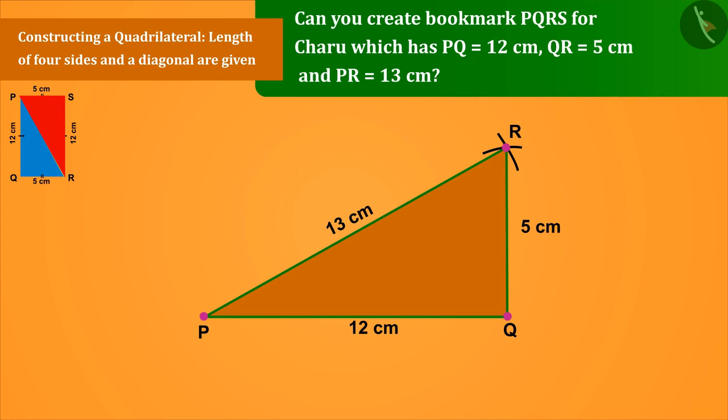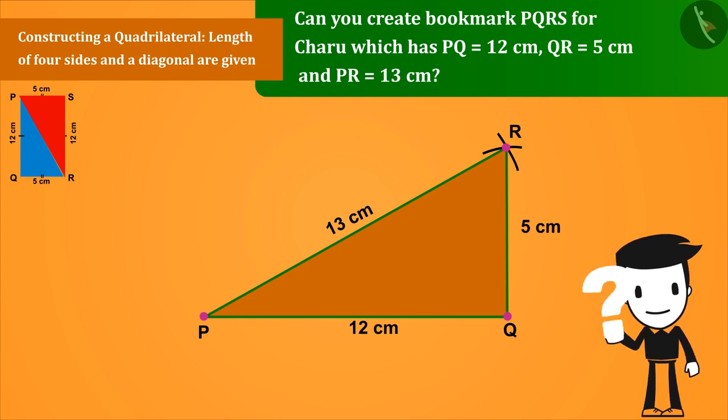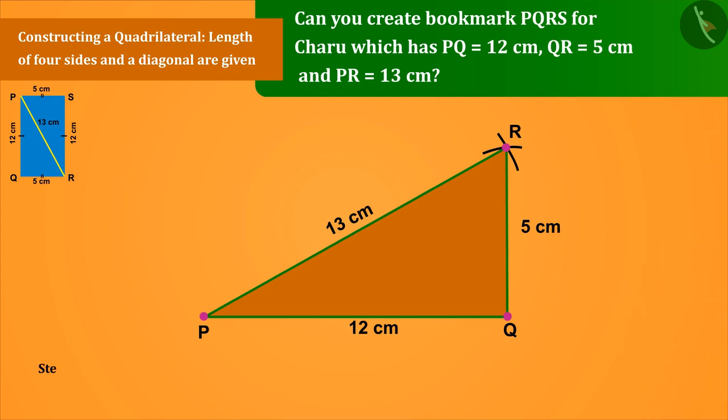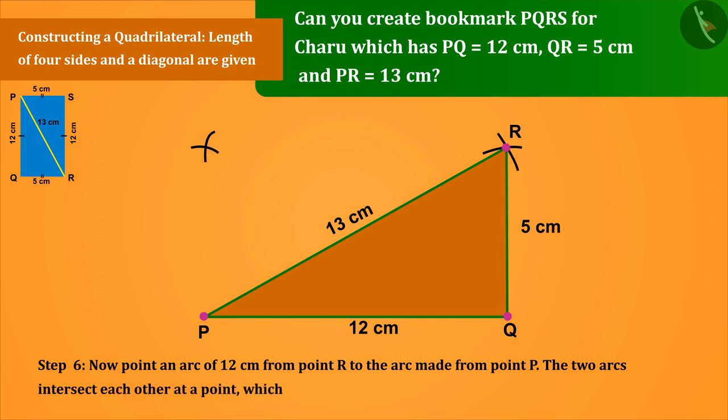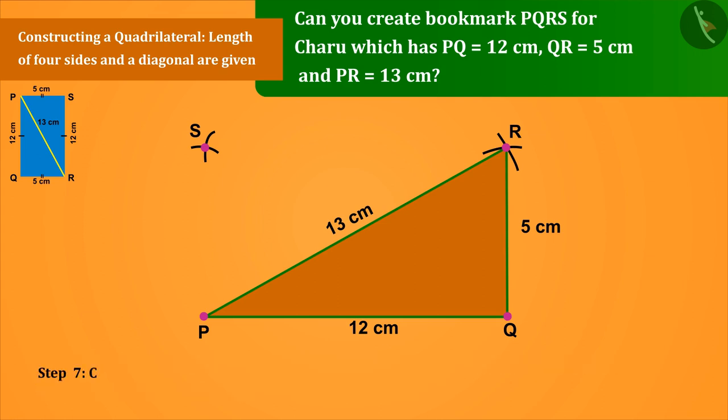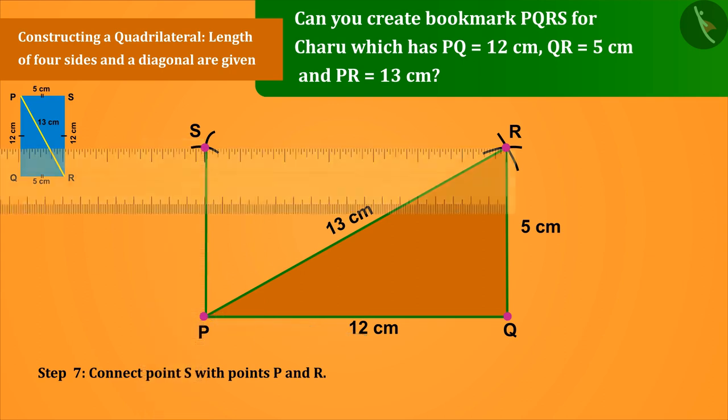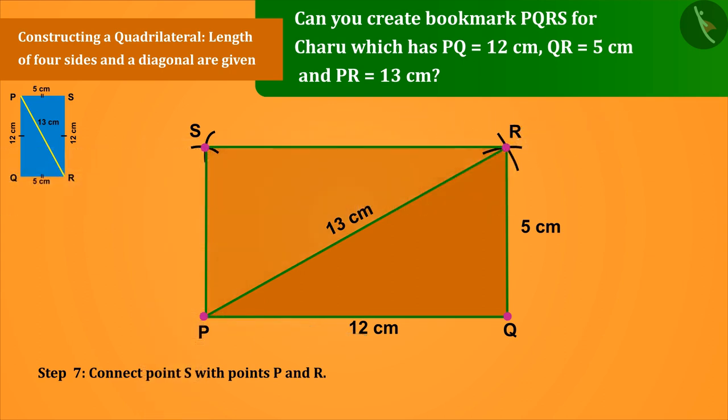Now can you think how to make a triangle PSR? The two arcs intersect each other at a point which we nominate with S. Now we connect the point S with the points P and R, from which we get the triangle PSR.